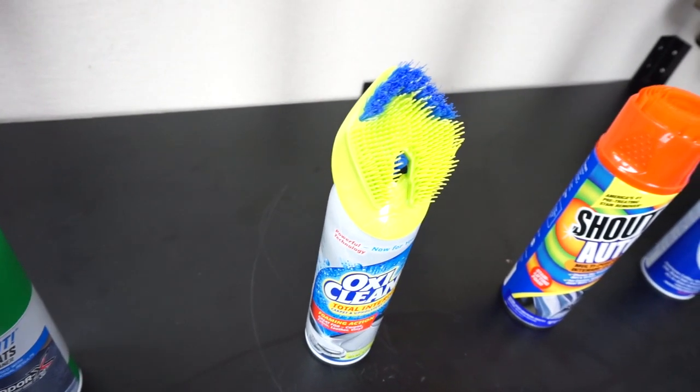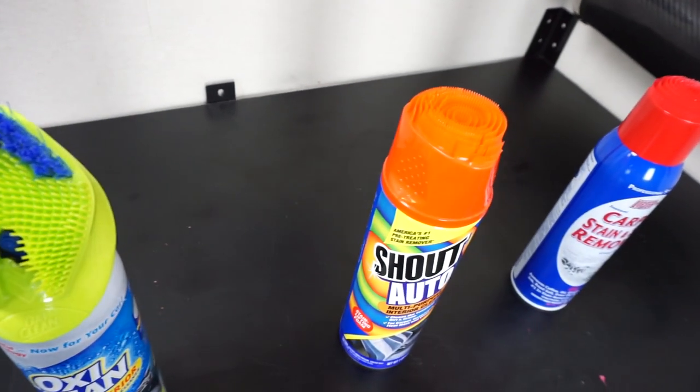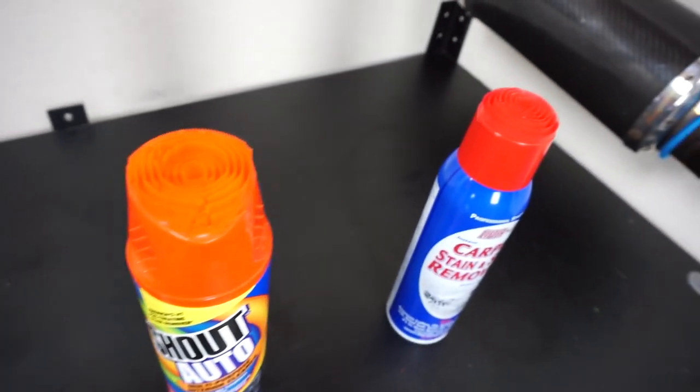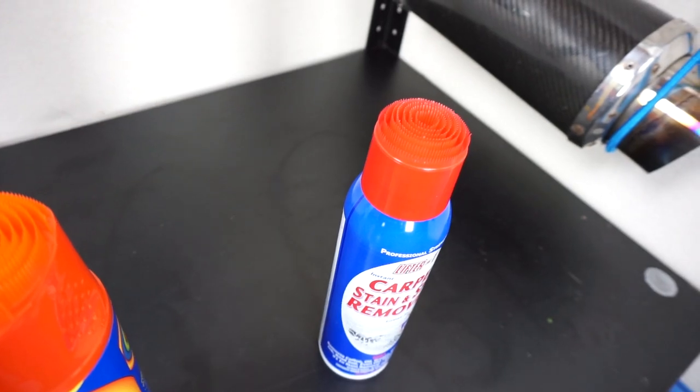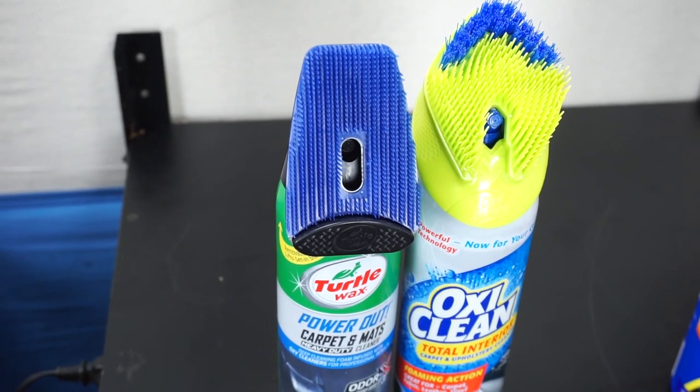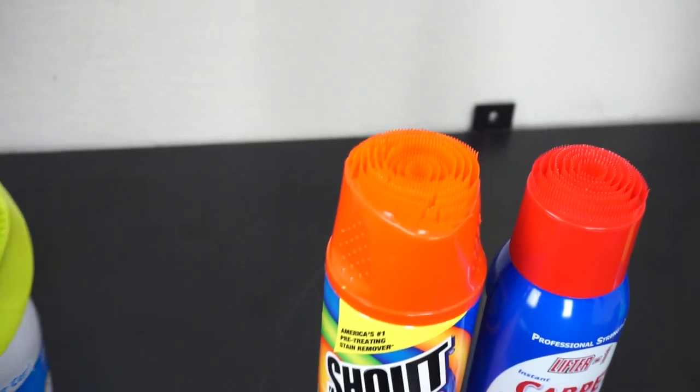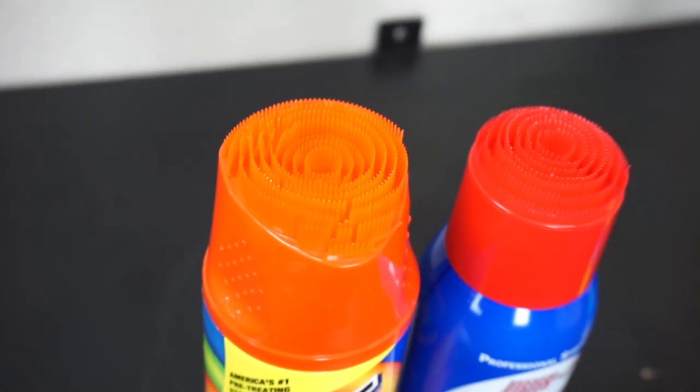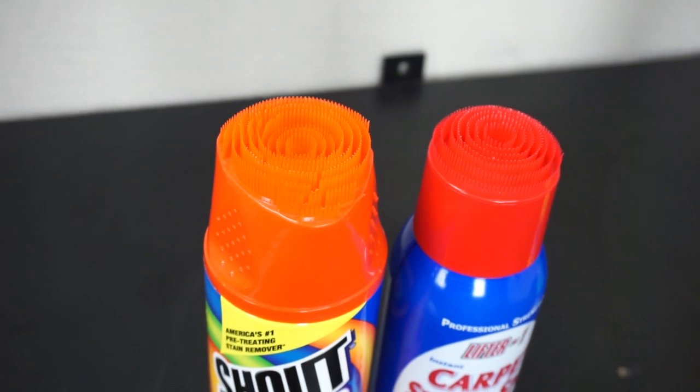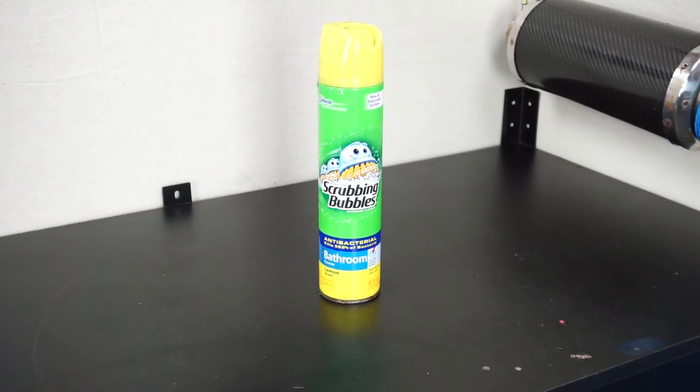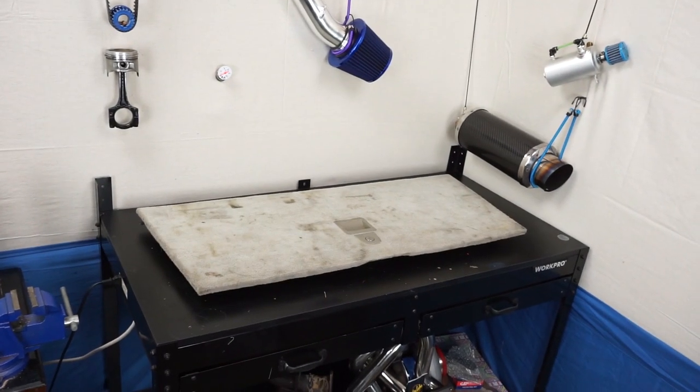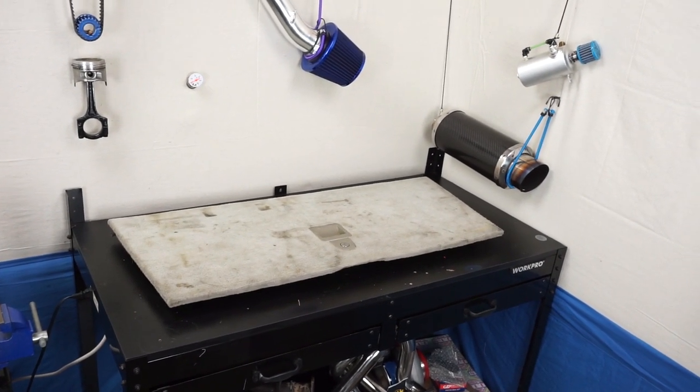First up, we have OxiClean Total Interior Carpet and Upholstery Cleaner. Next, we have Turtle Wax Power Out Carpet and Matts. Third is Shout Auto Multipurpose Interior Cleaner. Number four is Lifter 1 Carpet Stain and Spot Remover. And finally, I'm also going to test Scrubbing Bubbles Bathroom Cleaner next to these, just to see what effects it will have.